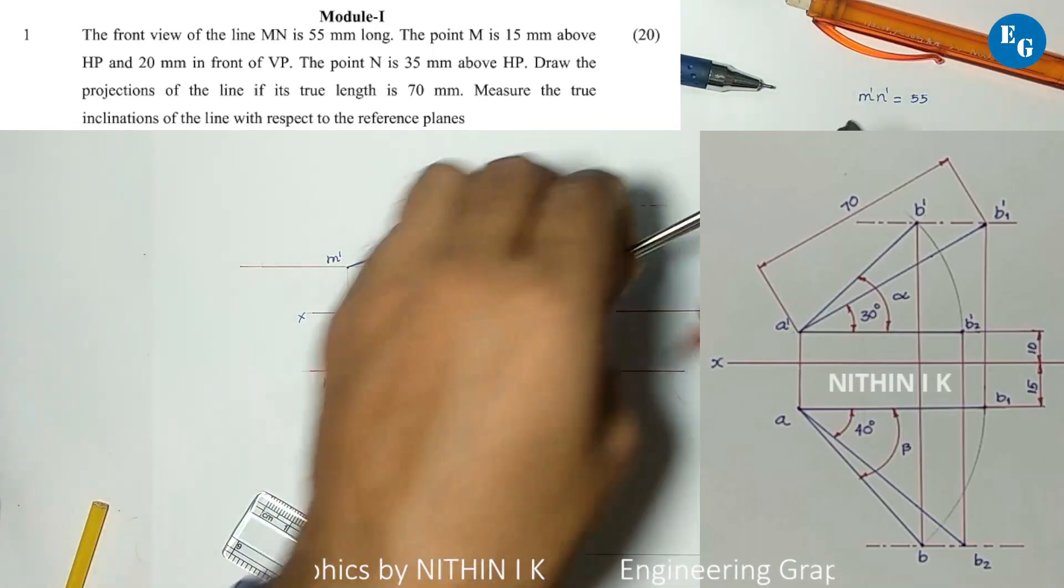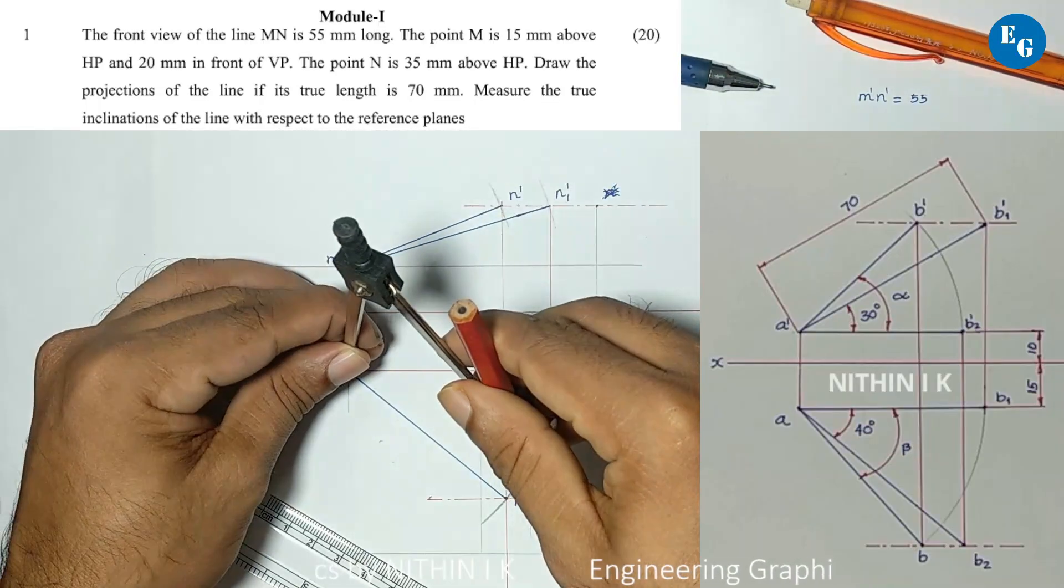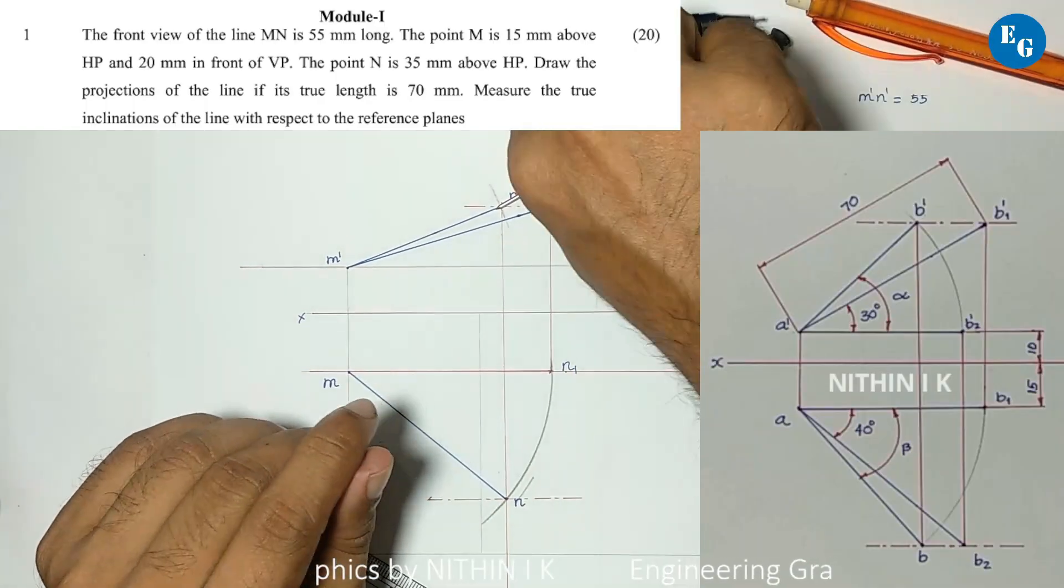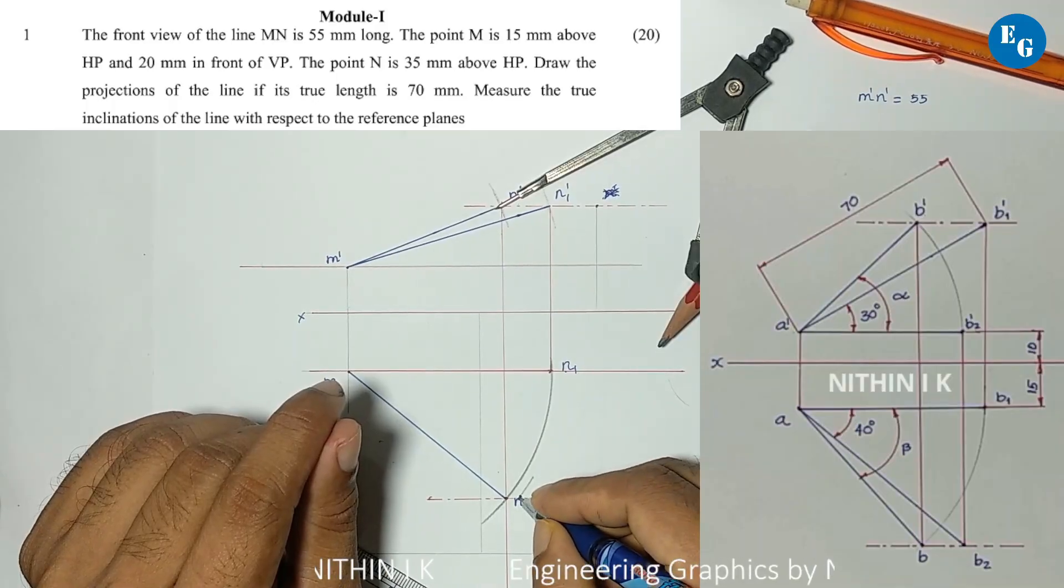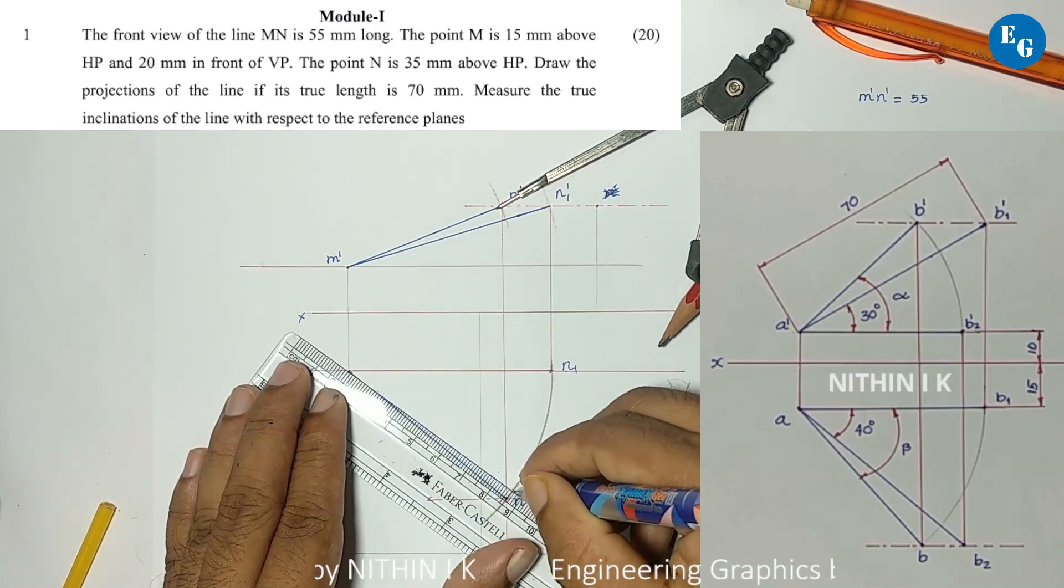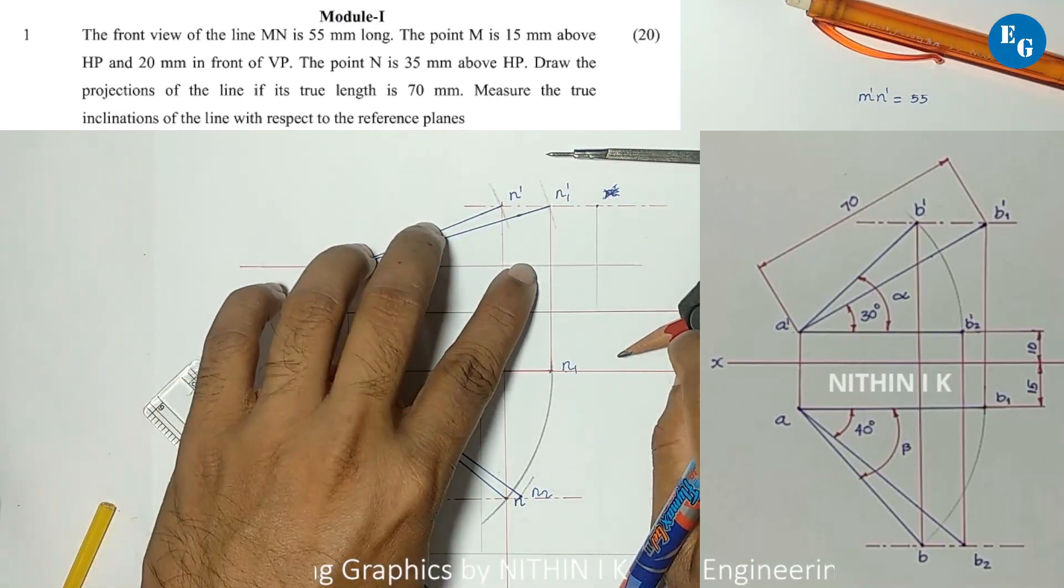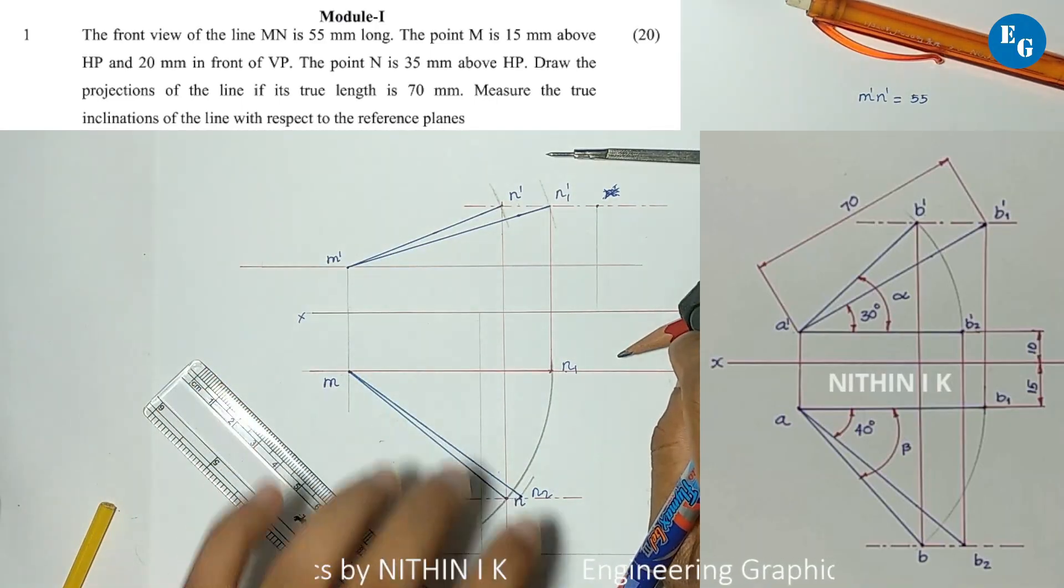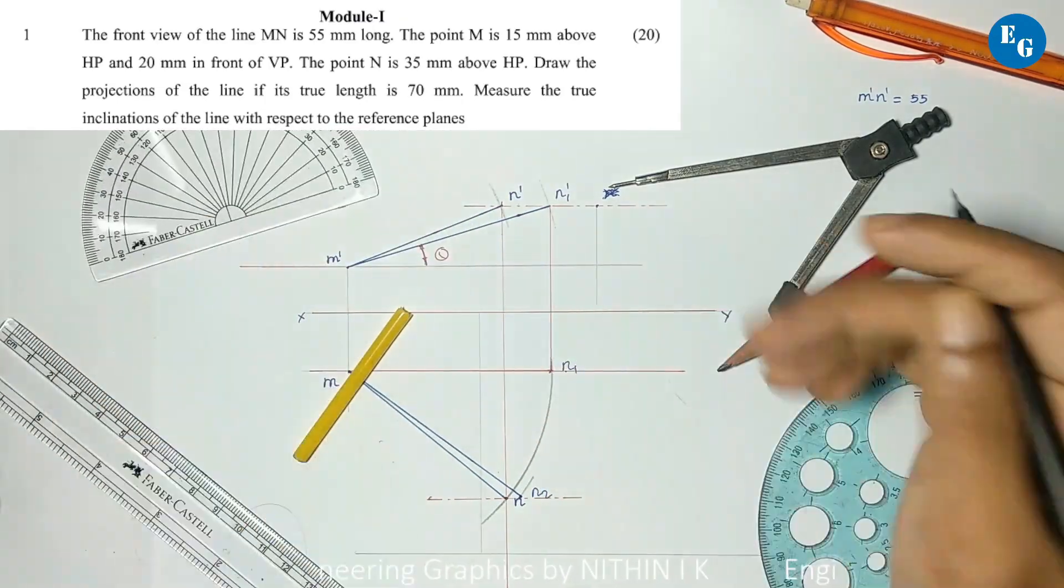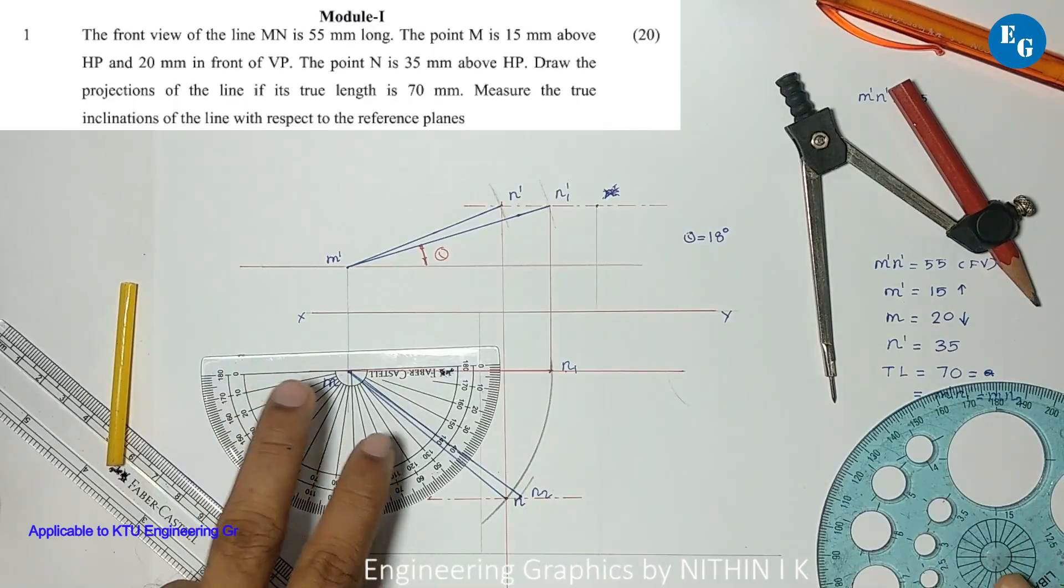True length is already drawn as m dash n1 dash. Now locate point n2 and join mn2. Projection is complete. Theta equals 18 degrees and phi equals 40 degrees. This is the answer.